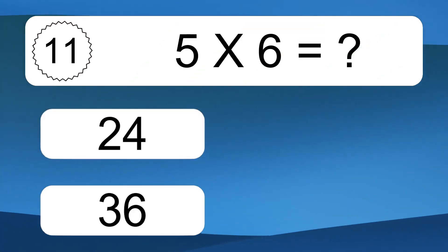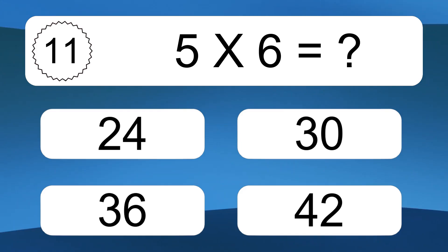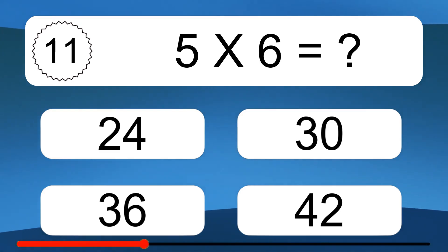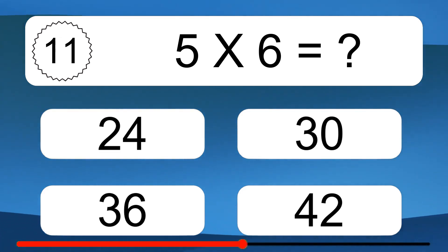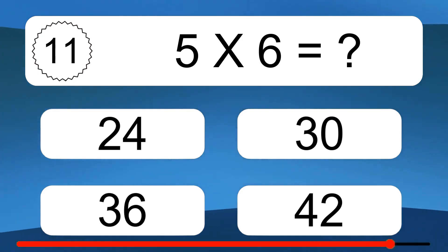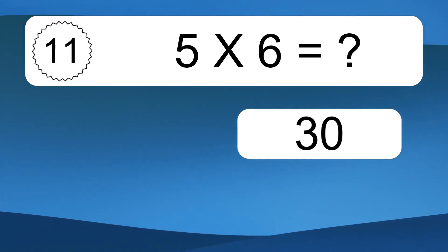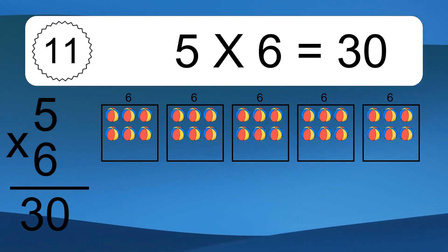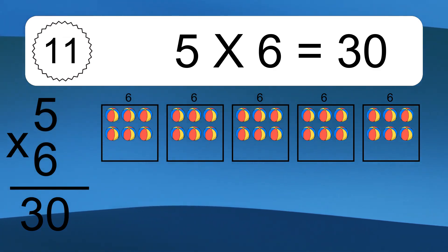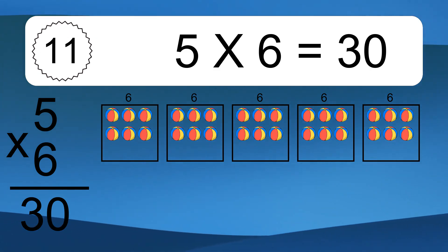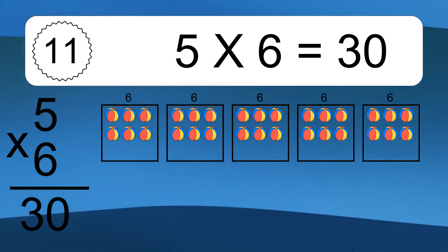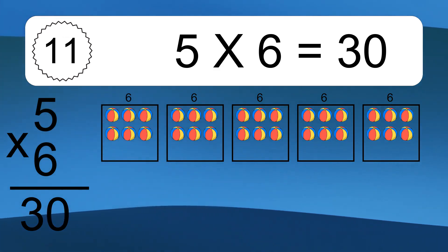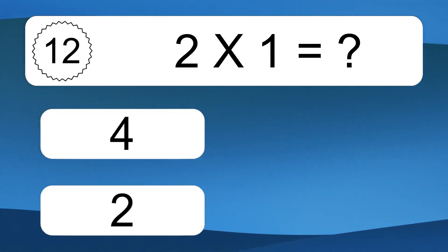5 times 6 equals what? 5 times 6 equals 30. We have 5 boxes and each box has 6 colorful balls inside. If you count all the balls in all the boxes together, you will have 5 times 6 balls. This equals 30 balls.